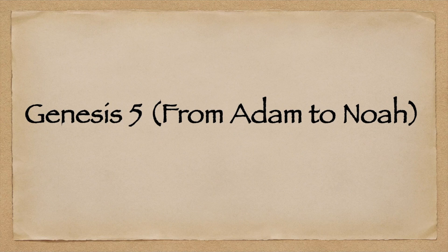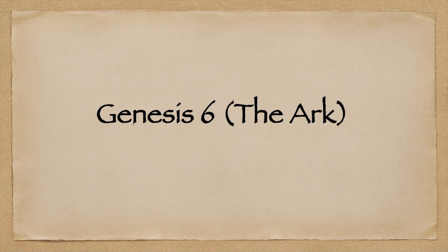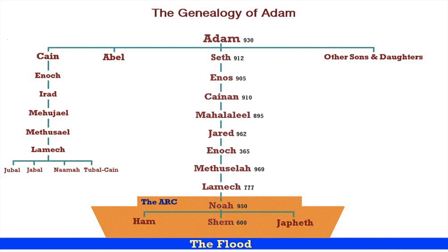Genesis chapter 5 covers from Adam to Noah — this is the genealogy. This is important because all humans descend from Noah, and specifically his sons Japheth, Shem, and Ham. We're all Noahites. Genesis chapter 6 covers the ark, which is what saved our ancestors Ham, Shem, and Japheth from the great flood.